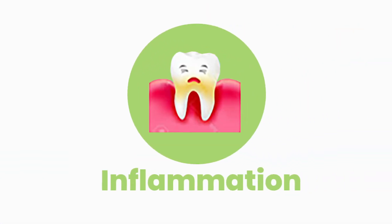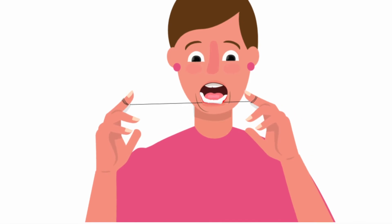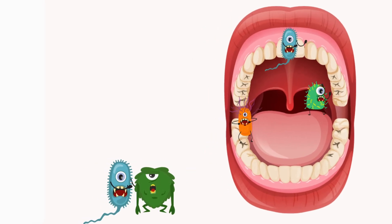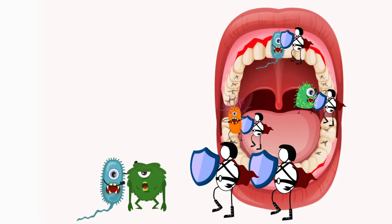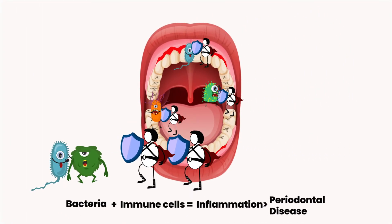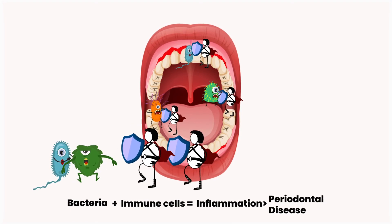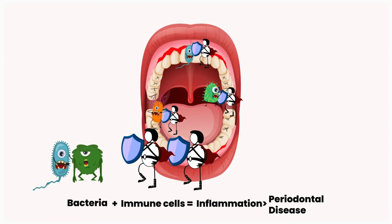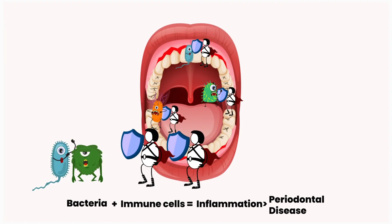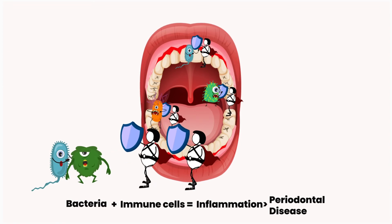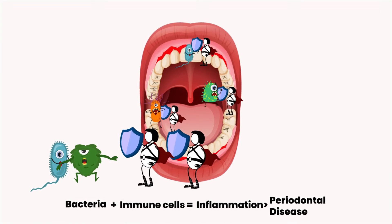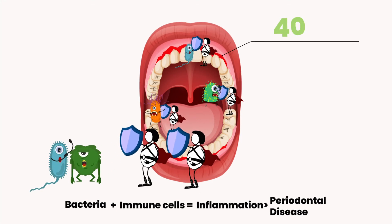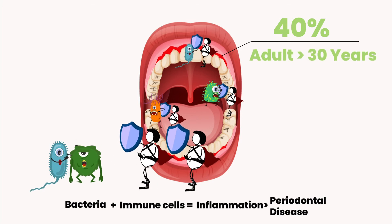Inflammation. If your gums ever bleed when you brush or floss, you are familiar with inflammation. To fight off pathogens like Bob and his friends, the body's immune cells flood tissues, leading to inflammation. Gums that bleed too much are a sign of excess inflammation or gum disease, which can lead to chronic periodontal disease. An imbalance of the microbiome can negatively impact the jawbone and gums, leading to gum diseases that often go unnoticed and affect about 40% of adults 30 years and older.